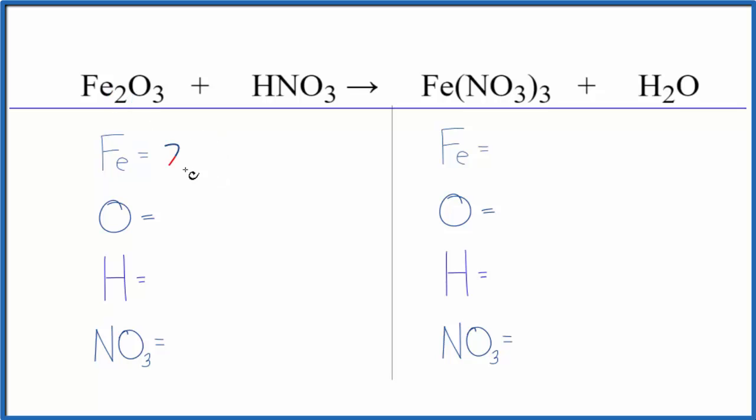So we have two iron atoms, three oxygen atoms, one hydrogen, and then this nitrate ion here. It stays together in the chemical reaction. We have it here, and then we have the nitrate ion over here. Since we have it on both sides, we're going to count it as one thing. We have one nitrate ion in the reactants.